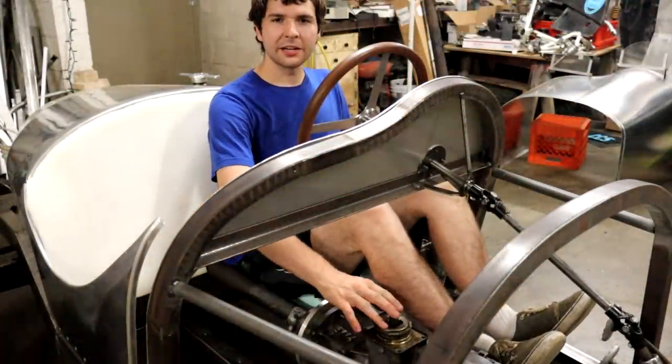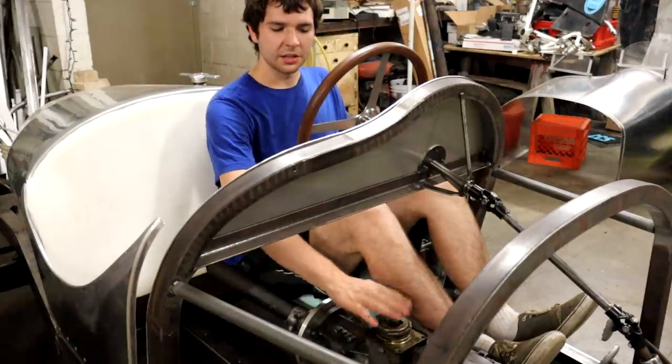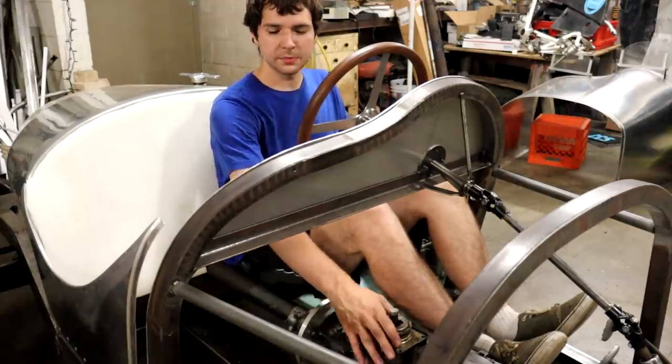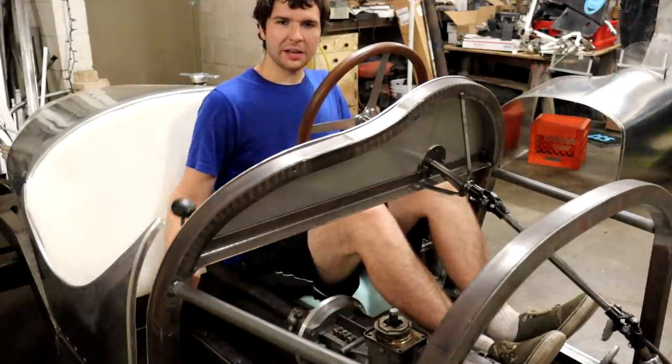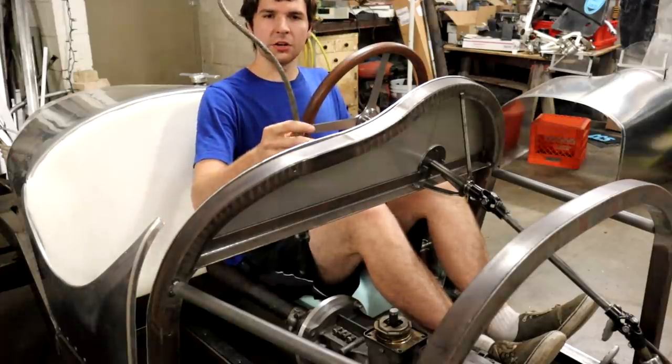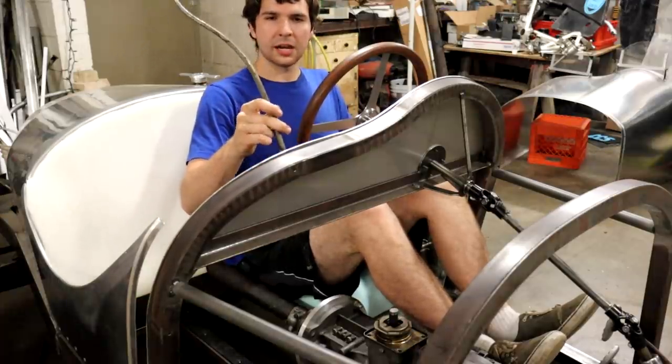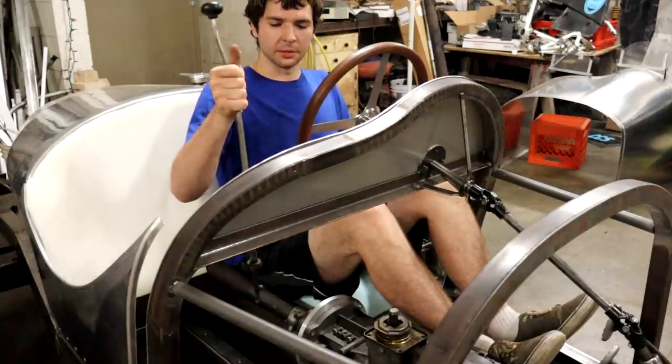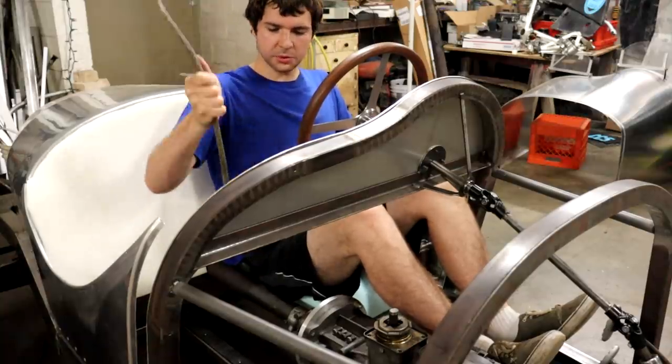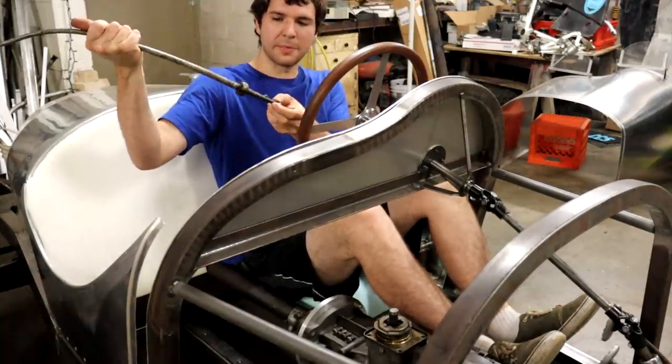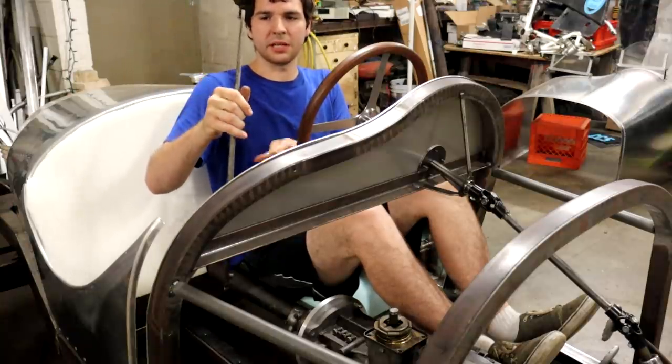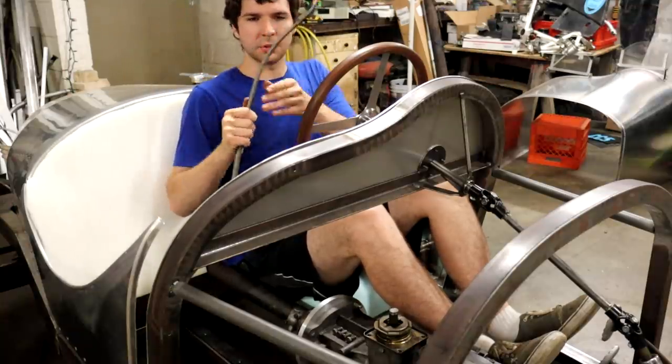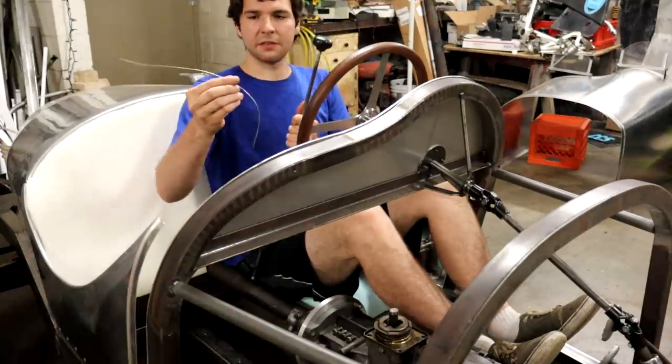Alright, so as you can see there, I cut off the top of the stock shifting arm from this transmission. And what I have with me here is an early Ford kind of swan neck style shifting arm. And this one is kind of messed up and mangled at the bottom here, so it's not a super pristine piece.